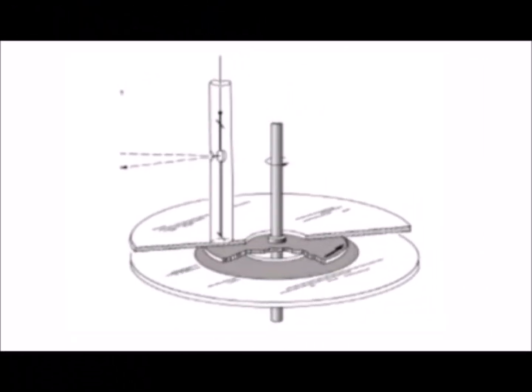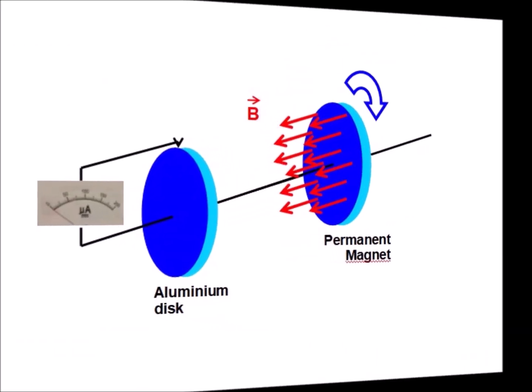In Rowland's experiment, the magnetic field observed at the edge of the rotating disk is the sum of the components in the plane of the disk of the rotational intrinsic fields of the rotating electric charges. The rotating conductor carries more protons than electrons, so the observed rotational magnetic field results from the excess protons.